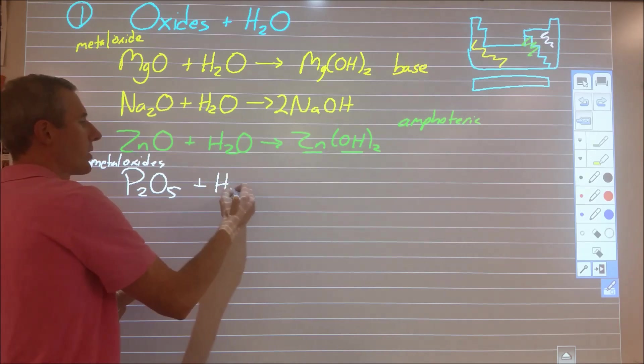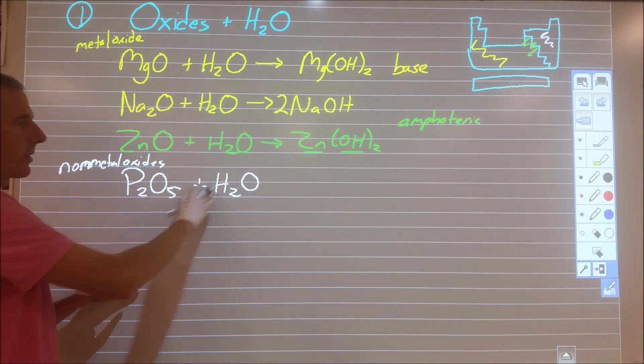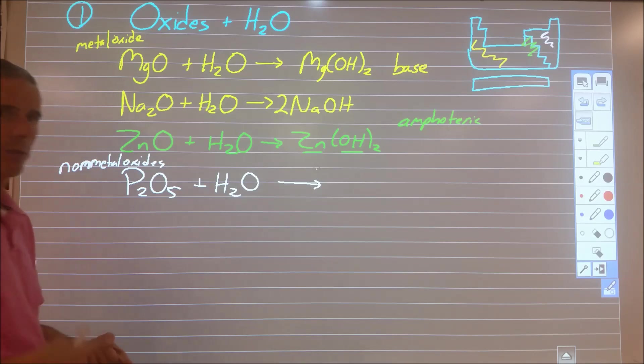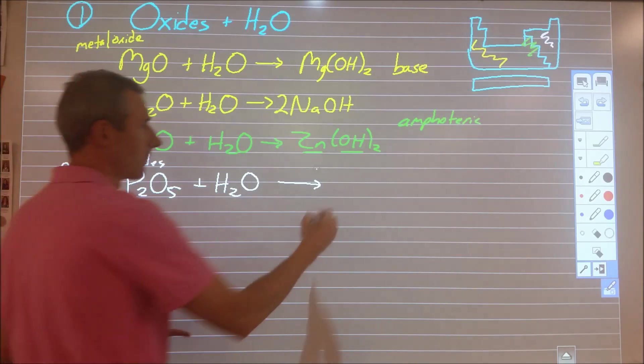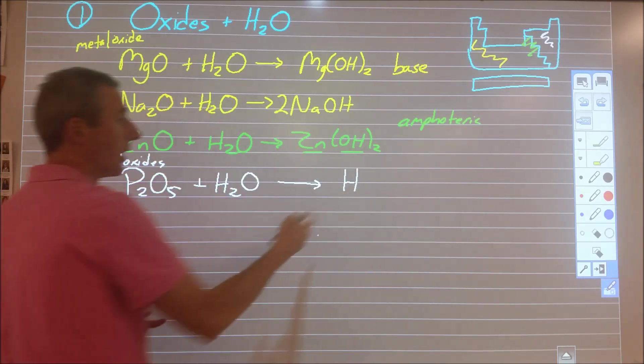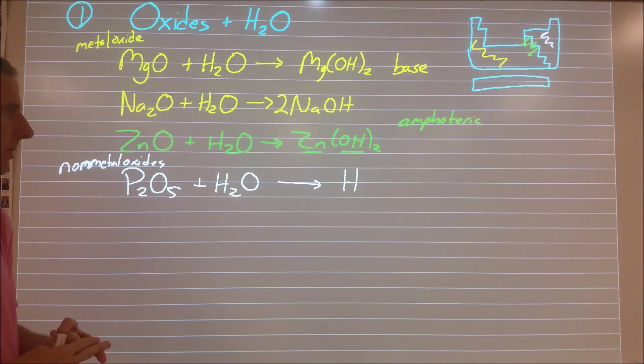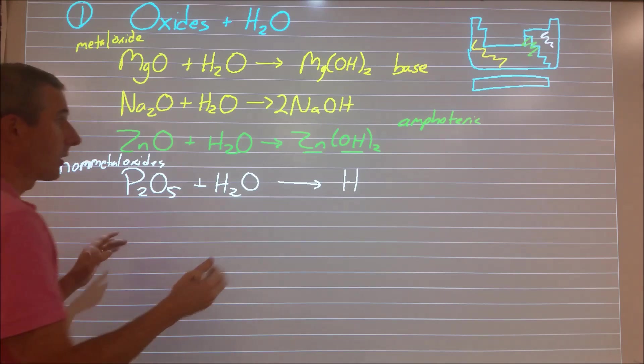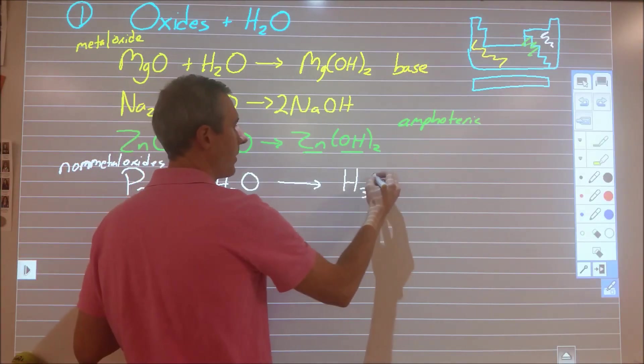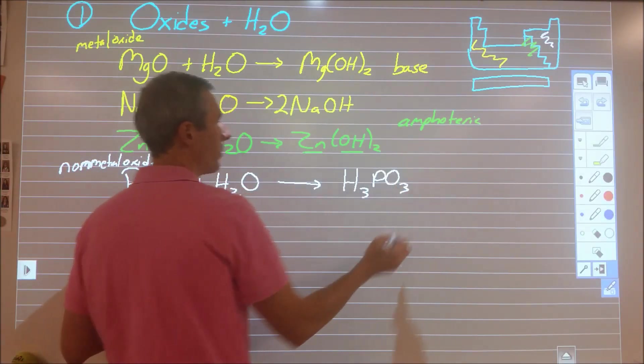So the way that you want to do the reactions for these is you just take your non-metal oxide, you add water, you're going to end up producing some kind of acid. So you're going to have hydrogen something. And the other thing, if it's oxygen involved, it's going to be a polyatomic ion. So you want to look and think, what are some polyatomic ions I can make between phosphorus and oxygen? So you've got phosphite and phosphate are the obvious choices. And when you pick, if you pick incorrectly, you'll find quickly that it's impossible to balance. So I'm going to pick incorrectly here, and I'm going to go with phosphate.